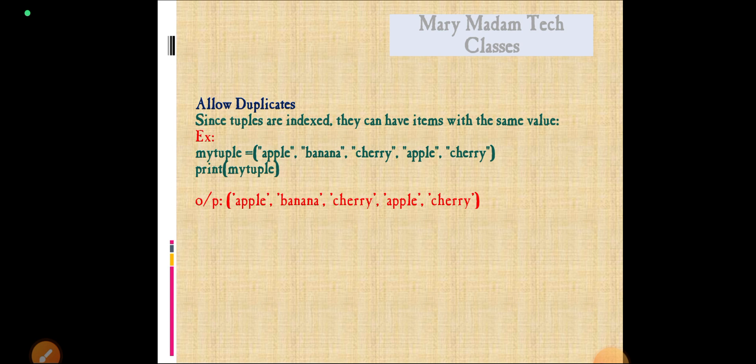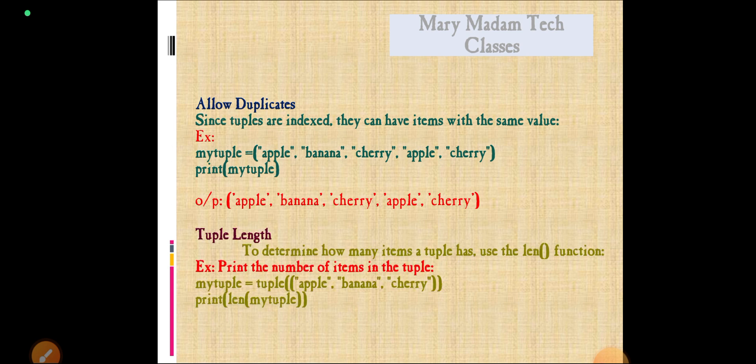Here tuples allow duplicates. If we see the example: apple, banana, cherry, and the same values apple and cherry. I want to print tuple. The output is apple, banana, cherry, apple, and cherry.